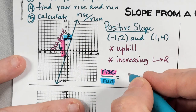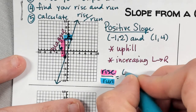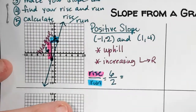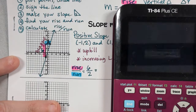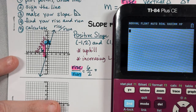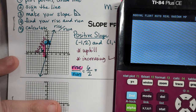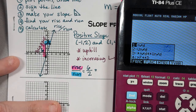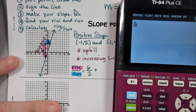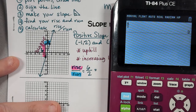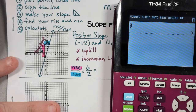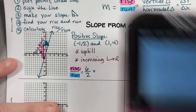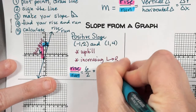I'm going to put my rise, which is six, over my run, which is two. You can just divide it, but I want you to practice using the fraction function on the calculator — fractions are alpha Y equals, then enter. Put six on top and two on bottom, hit enter, and it tells me the answer is three.